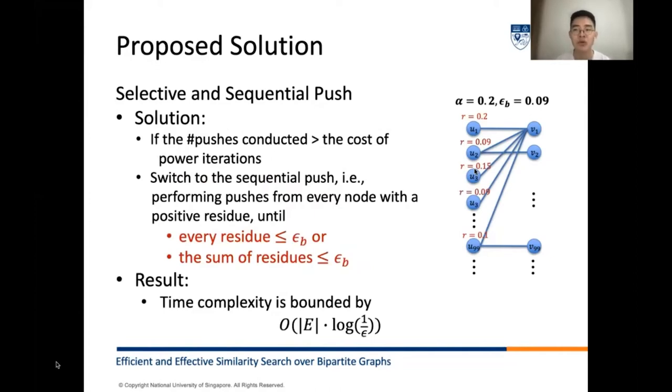To alleviate the drawbacks of selective push, we propose to switch to preferred sequential push in some conditions. A sequential push is actually a selective push where the error threshold epsilon_b is set to zero. More specifically, we perform push from all nodes with positive residuals until every node has a residual smaller than epsilon_b or the sum of all residuals is less than epsilon_b. The sequential push is invoked when the total selective push operations performed exceeds the cost of using power iterations. This means we do not allow the total cost of the selective and sequential push exceeds the cost of the power iteration method.